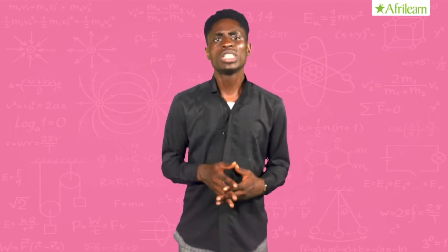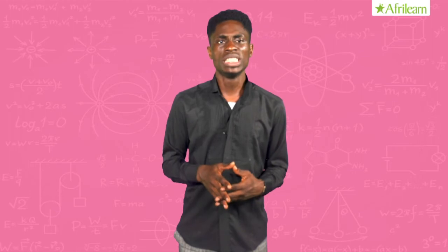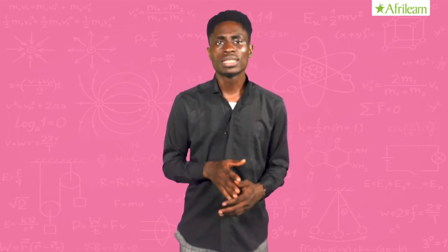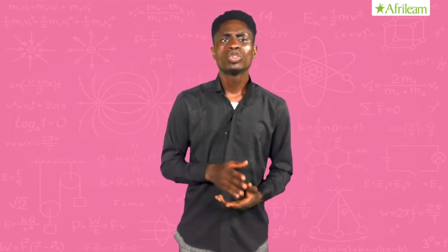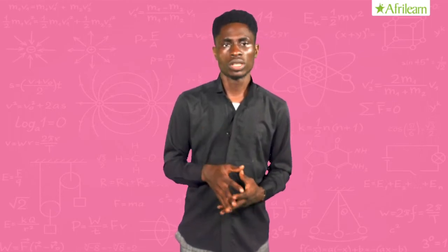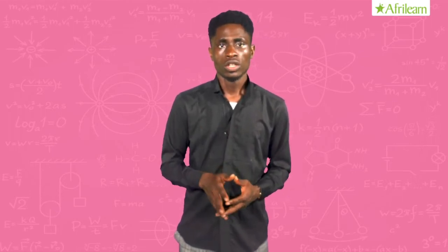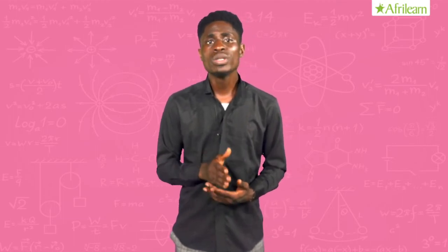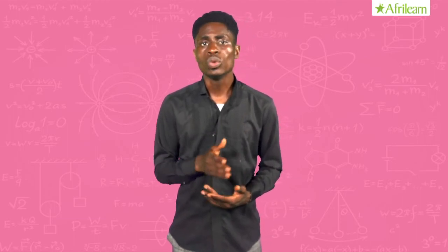Simple pendulum is used in the laboratory with the stopwatch to measure the time it takes to have a complete oscillation. To do this, the pendulum swings right to left.